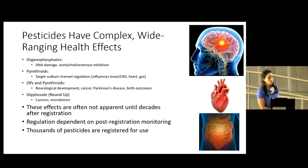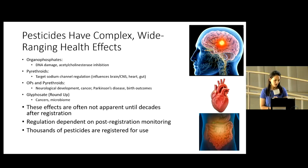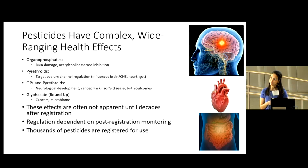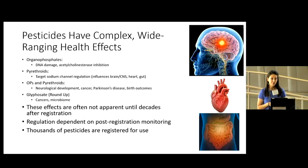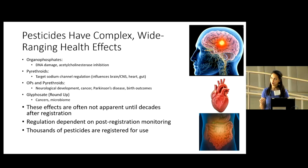Pesticides have really complex, wide-ranging health effects. The targets depend on the class and the type, but these effects are often not apparent until several decades after registration. Glyphosate, for example, was registered sometime in the 1950s and it's being pulled from the market next year — after 70 years of chronic exposure and potentially causing lots of cancer.